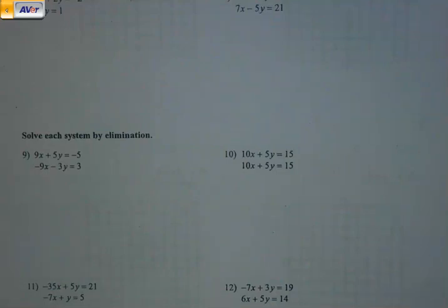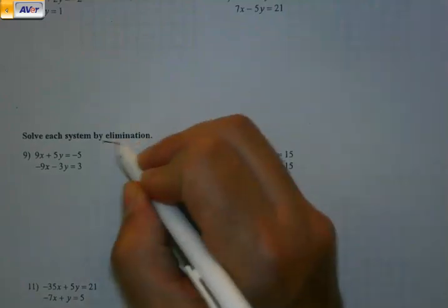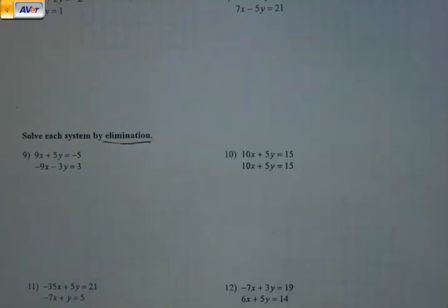We are starting our second part on page 55. Yesterday we did graphing and substitution for our systems. Now today, we're going to do elimination, and it's just like what it sounds. Our goal is to eliminate a variable.